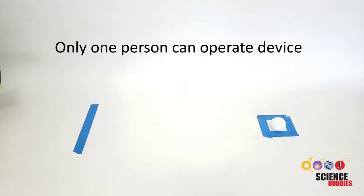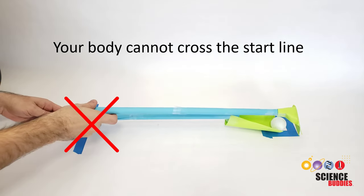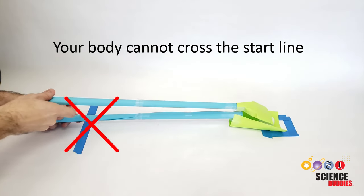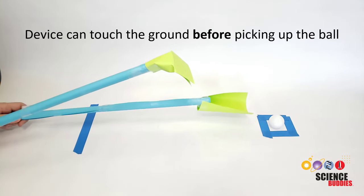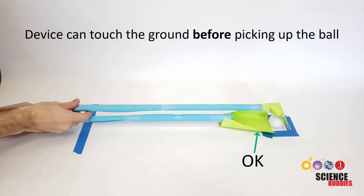Only one person can operate the device at a time. No part of your body can cross the start line after the trial has started. It's okay for your device to touch the ground before picking up the ball, for example while scooping or grabbing it.